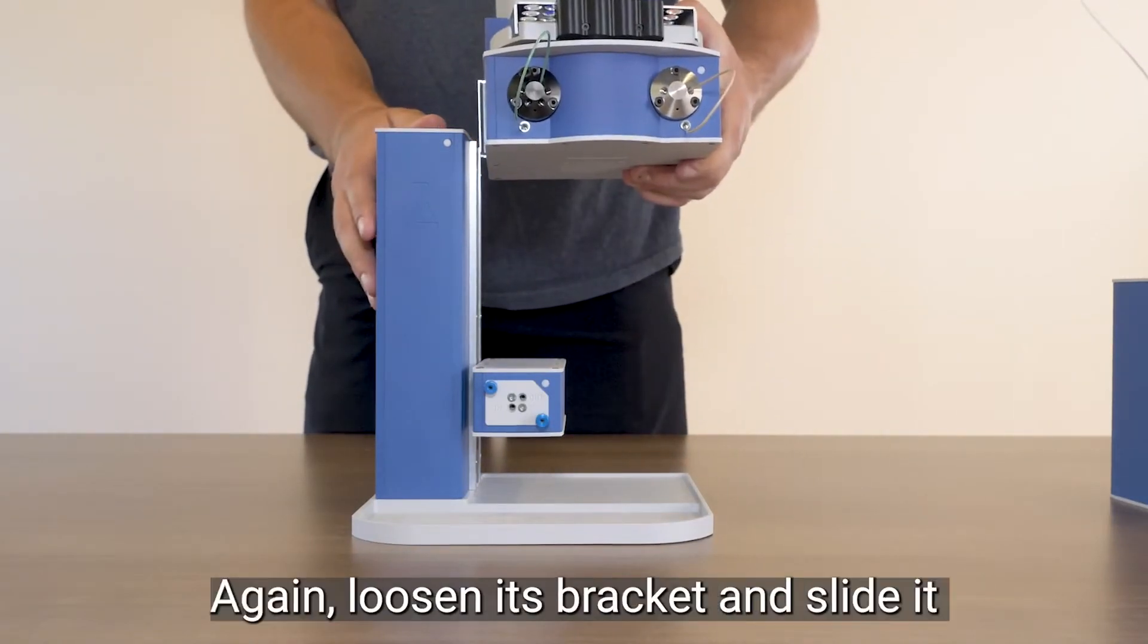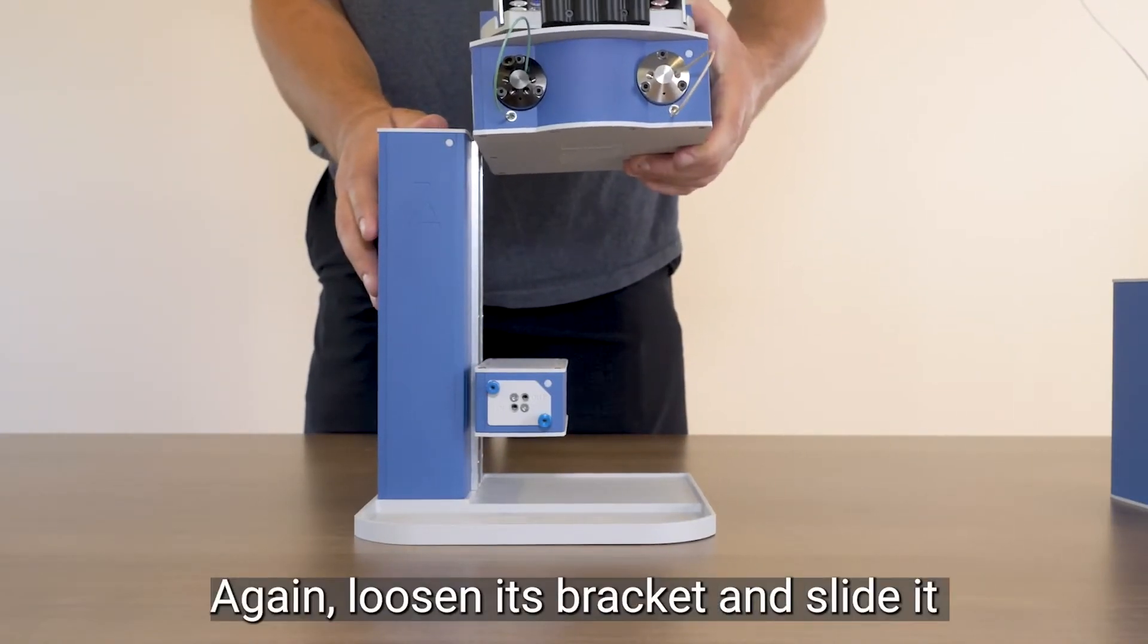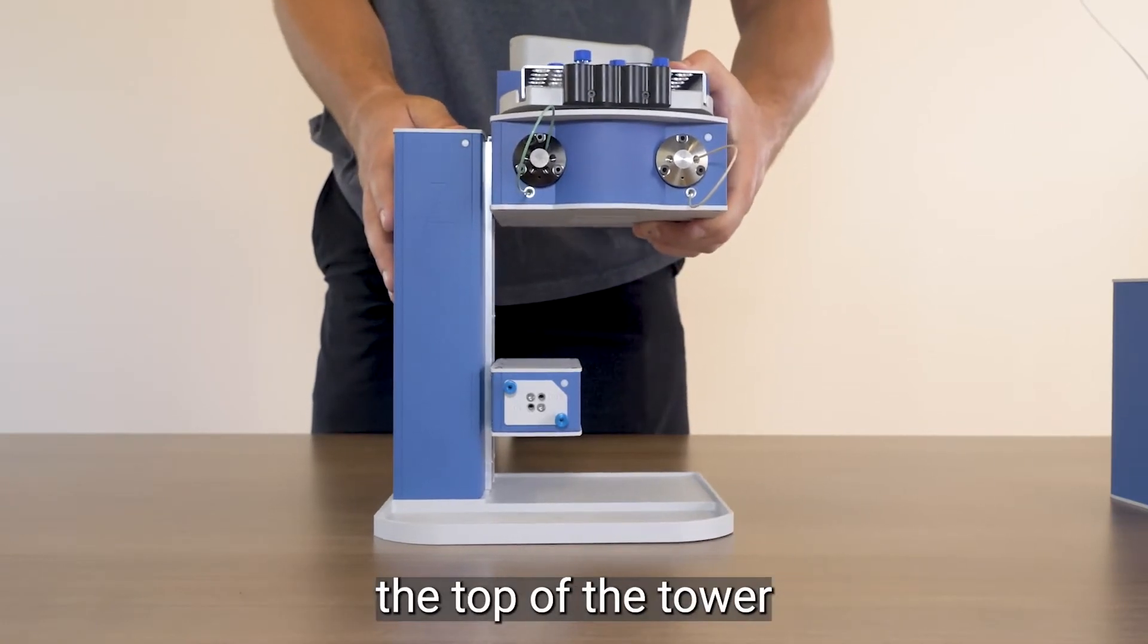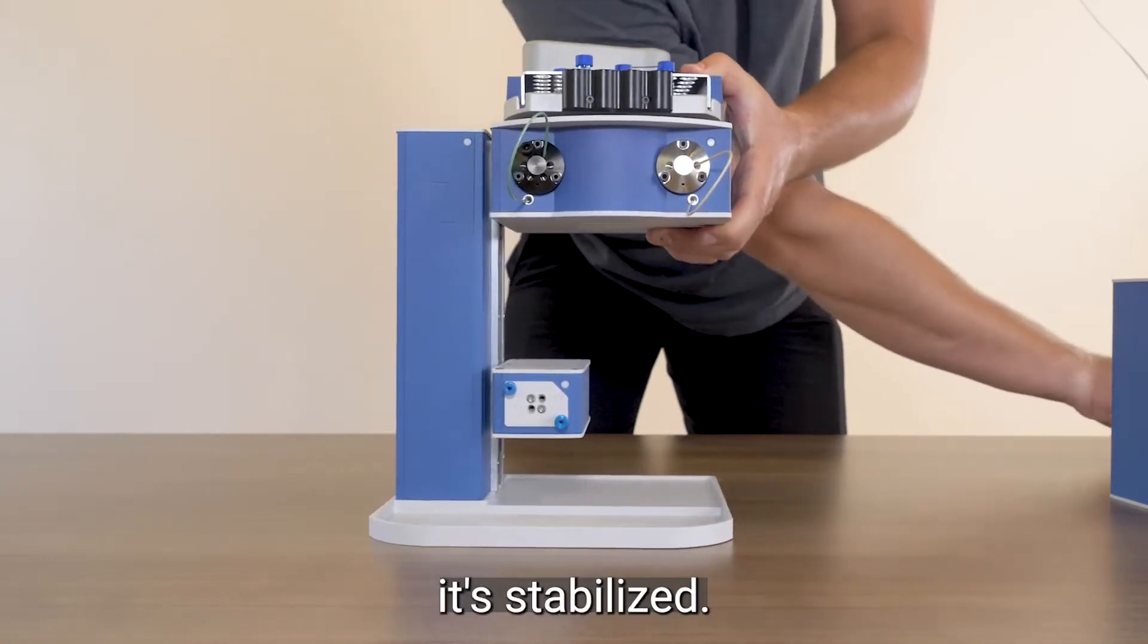Now the Auto Sampler. Again, loosen its bracket and slide it just so its platform is even with the top of the tower. Then tighten it to make sure it's stabilized.